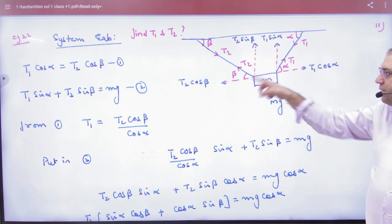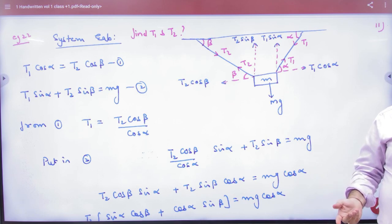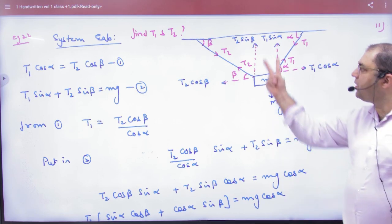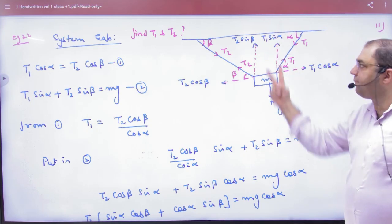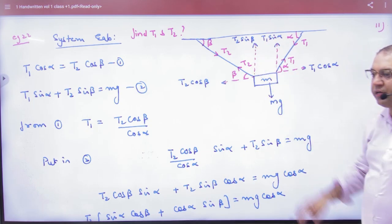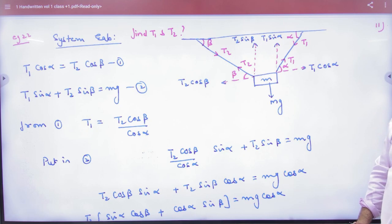So now let me tell you that because you have made the components of tension, this mass on the top has which two forces? One is T1 sin alpha and T2 sin beta. And on the bottom, which force is there? mg.